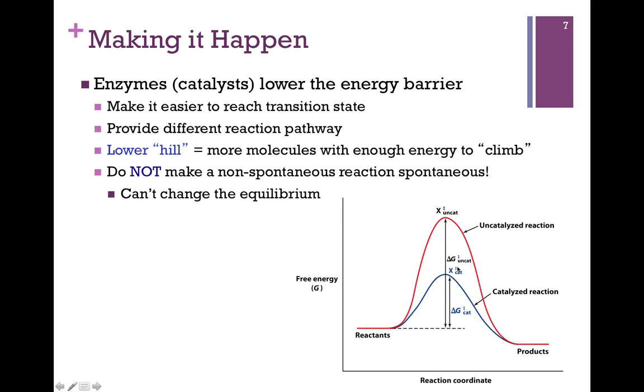Enzymes function by lowering that energy hill. So in red here, we have the uncatalyzed reaction. Here's our unstable transition state intermediate, X double dagger. And you can see a very high energy hill here, so very few reactants would actually get to the top of that hill and make it down to the other side to form products. So that's the delta G associated with that change is the delta G double dagger of the uncatalyzed reaction.